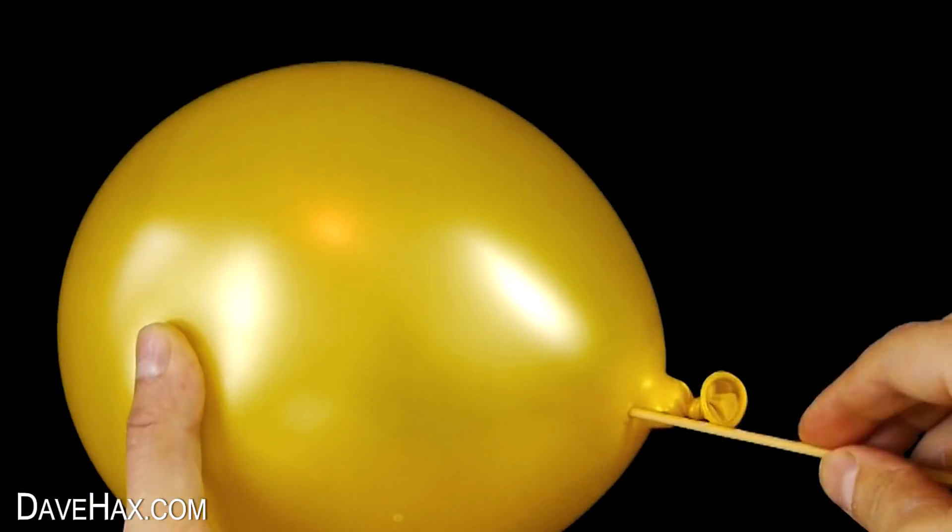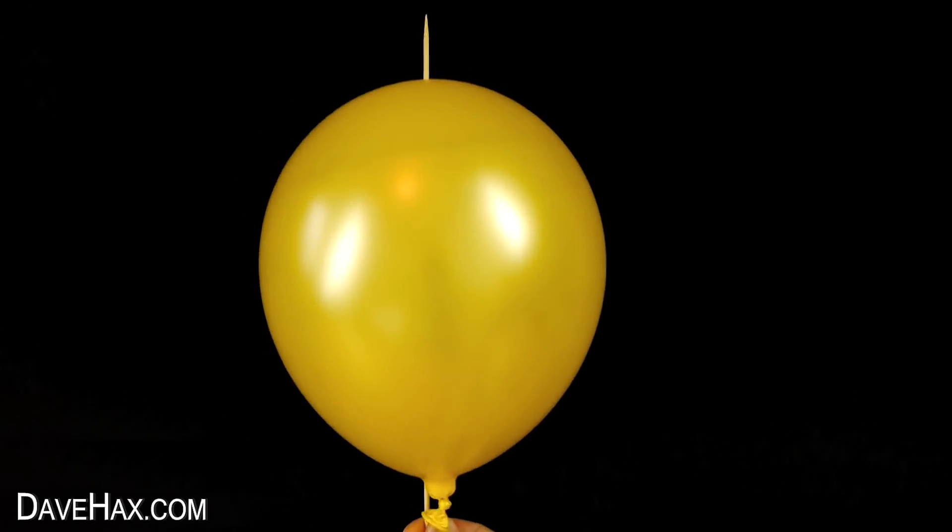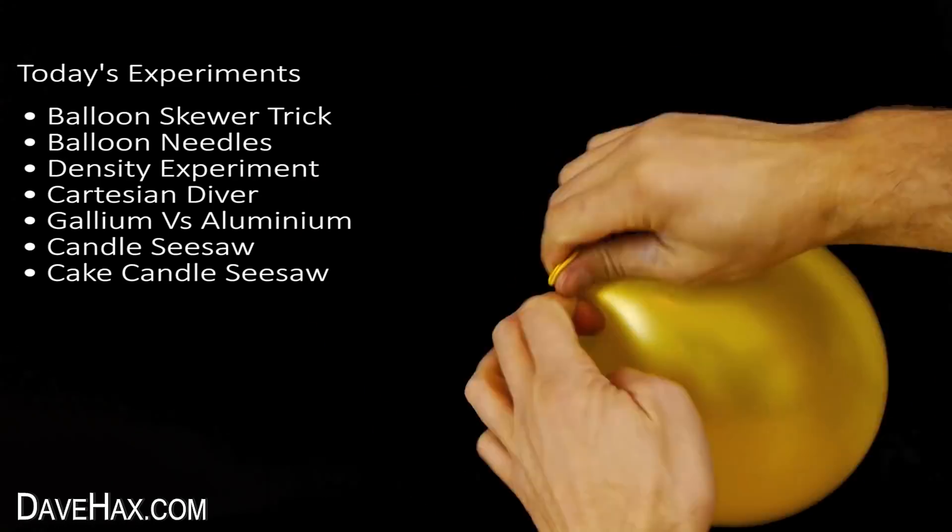The first experiment I'm going to show you is how to thread a balloon onto a skewer. It looks really cool and it's a great party trick. To do this, we start by taking an ordinary balloon, blow it up, and tie a knot in it.